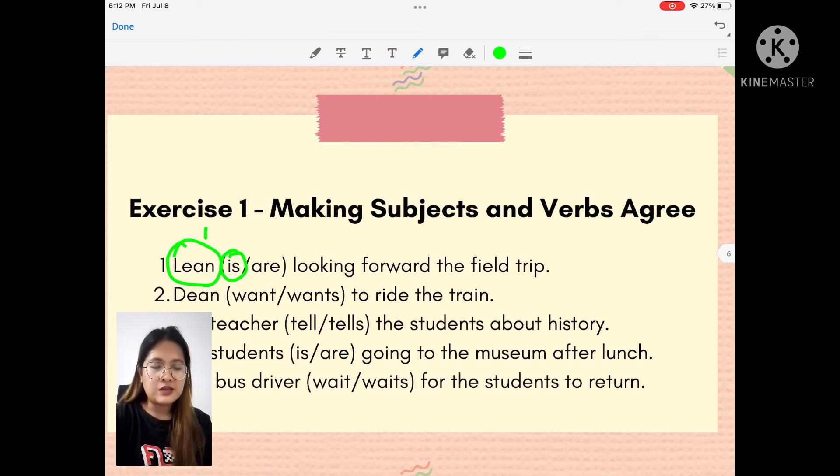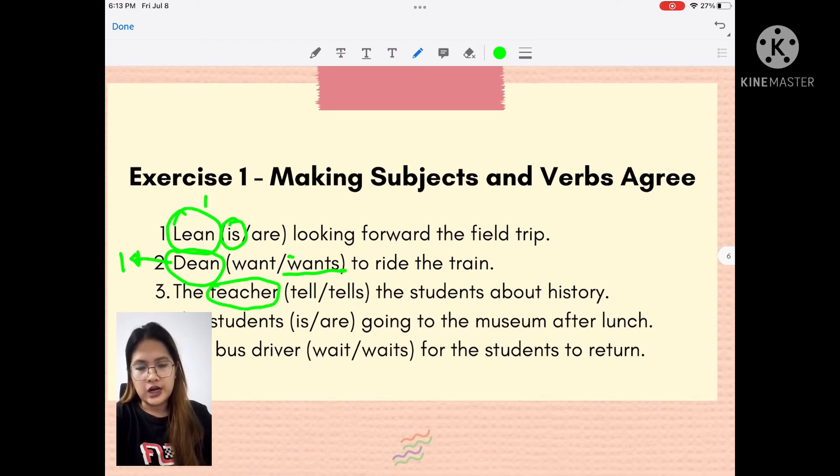Next. Dean, want, wants to ride the train. Ano yung subject natin? Dean. Kung pangalan niya ng lalaki, ilan siya? Isa lang. So, ano dapat yung verb? Wala siyang S. Isa lang. Singular. So, dapat, based dun sa rule natin kanina, correct. Dapat yung sagot mo is, wants. Wala siyang S. So, dapat dito may S. The teacher tells the students about history. Teacher. Isa lang. So, dapat may S ang verb. Correct. So, the teacher tells the students about the history. Or about history.